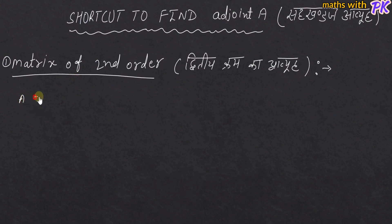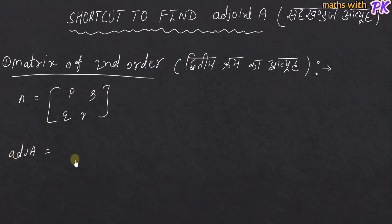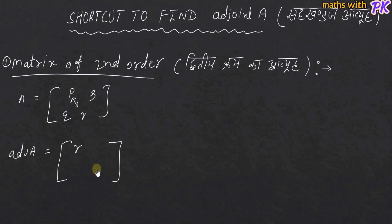We have given a matrix like P, Q, R, S and this is Adjoint A for a second order matrix. What do you want to do? You want to change the elements of the principal diagonal — the principal diagonal is interchanged: R to P and P to R. The off-diagonal elements Q and S will change sign. We will change the view of Adjoint A.